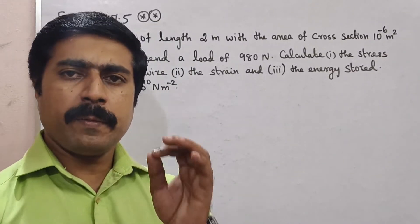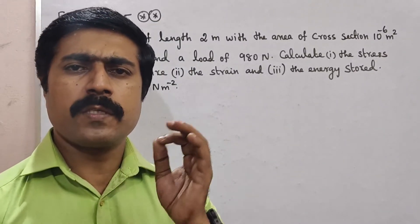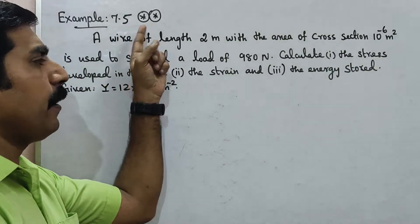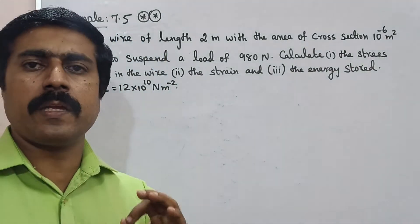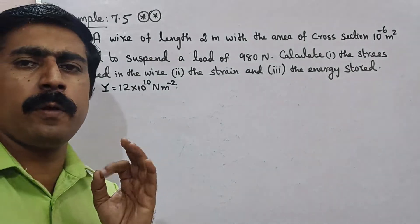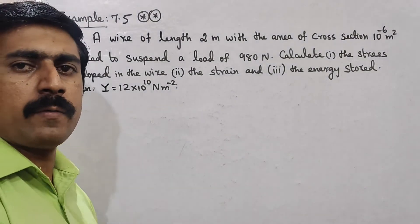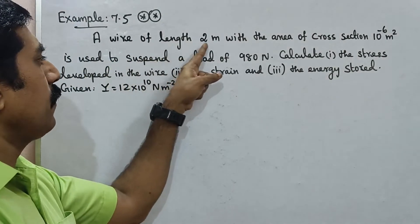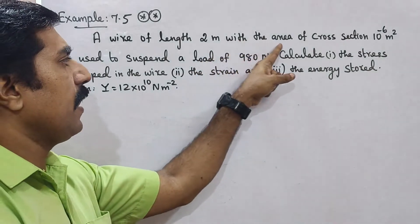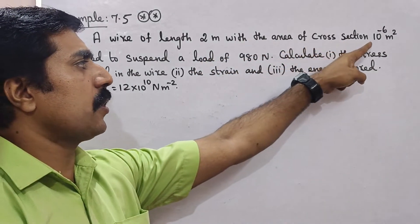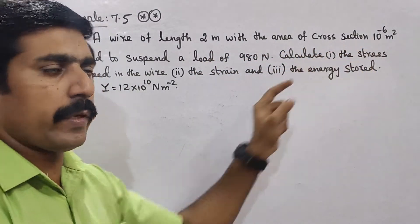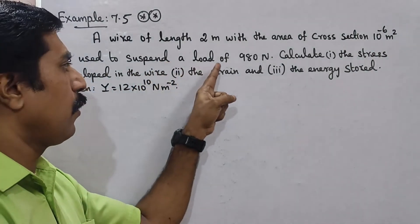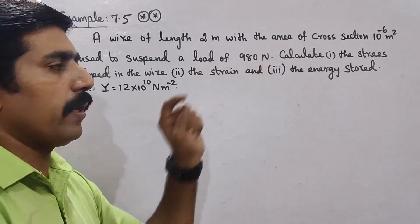Hi students, now we are going to talk about the most important problem, example 7.5. A wire of length 2 meters with the area of cross section 10 power minus 6 meter square is used to suspend a load of 980 newton.